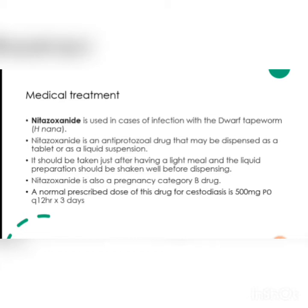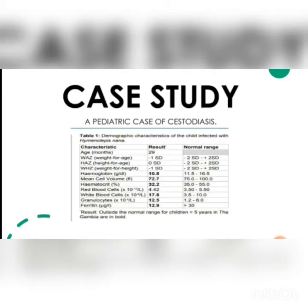The second drug is Nitazoxanide, used in cases of infection with the dwarf tapeworm. It is an antiprotozoal drug also available in liquid suspension form. The best time to take this drug is with a light meal. The main dose is 500 mg per oral every 12 hours, and the duration of treatment should be three days.